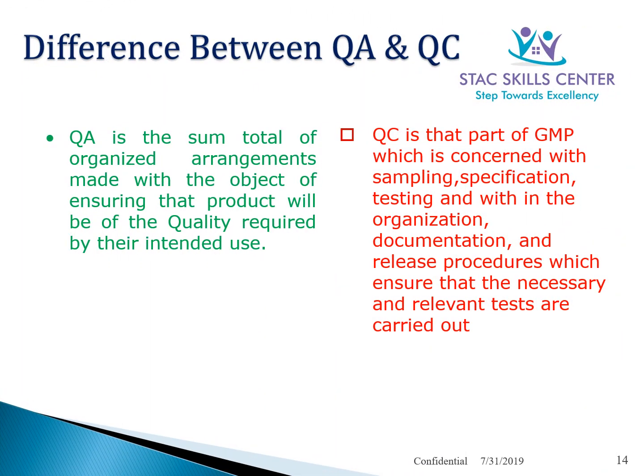What is the difference between QA and QC? QA is the sum total of organized arrangements made with the objective of ensuring that a product will be of the quality required for its intended use. Whereas QC is that part of GMP concerned with sampling, specification, testing, documentation, and release procedures, which ensures that the necessary and relevant tests are carried out.